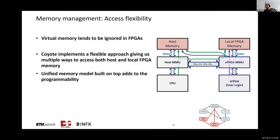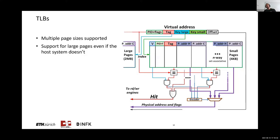It does add some overhead, but this is the price you have to pay for the abstractions. TLBs are pretty straightforward. One thing worth mentioning is that we support multiple page sizes, including huge pages, which gives us much wider coverage than regular 4K page sizes. We do this by having parallel lookup in parallel TLBs with different page sizes.